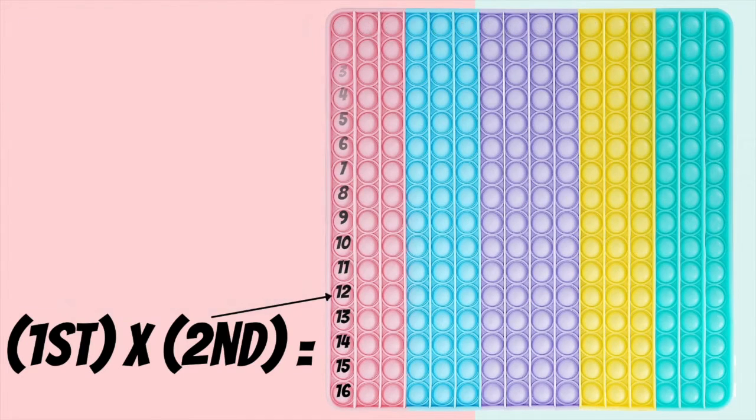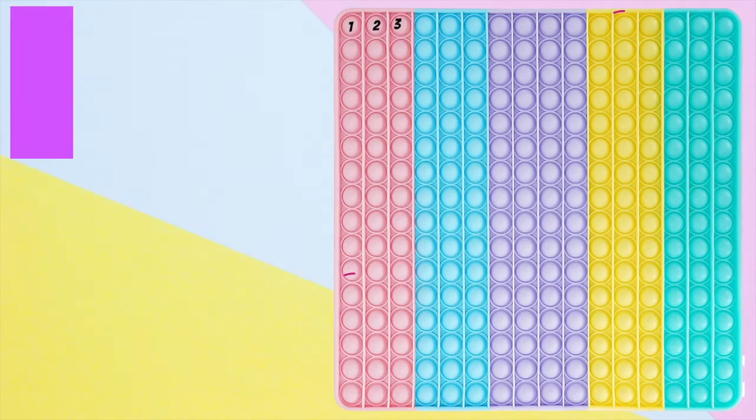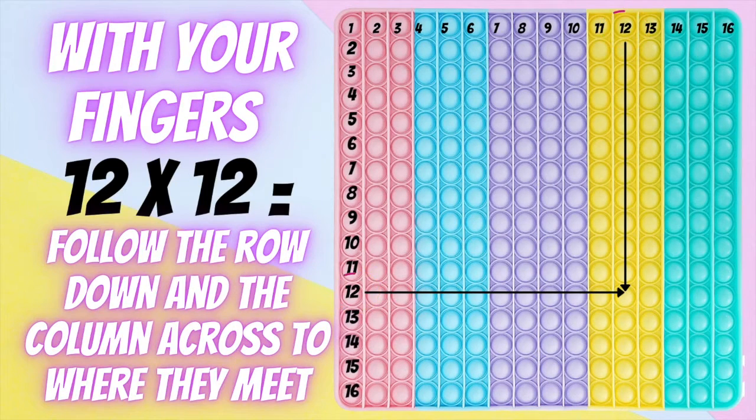So for this example, we'll use 12 times 12. So find 12 in the top row, and 12 in the column. With your fingers, trace down and over to where that meets.